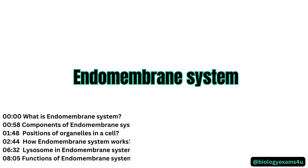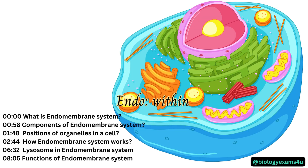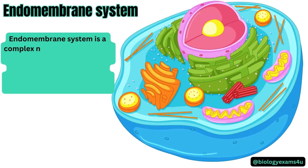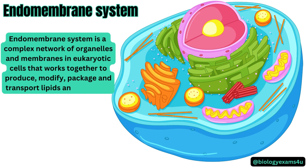Let's begin with the term. The term 'endo' means within. So it refers to a membranous system that is within the cell, called the endomembrane system. It's a complex network of organelles and membranes in eukaryotic cells that works together to produce, modify, package, and transport lipids and proteins.